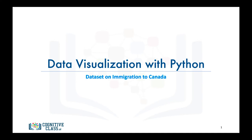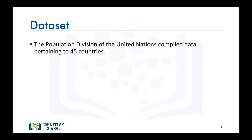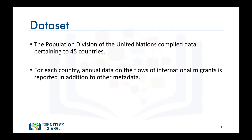In this video we will learn more about the data set that we will be using throughout the course. The population division of the United Nations compiled immigration data pertaining to 45 countries. The data consists of the total number of immigrants from all over the world to each of the 45 countries, as well as other metadata pertaining to the immigrants' countries of origin.